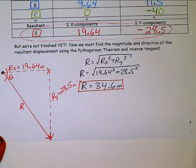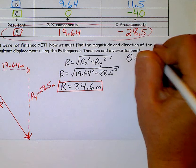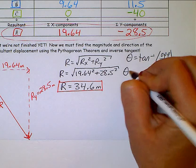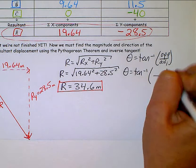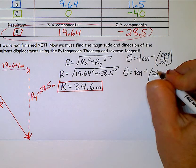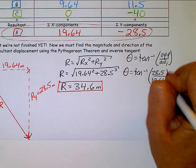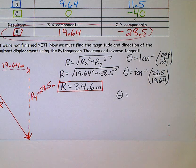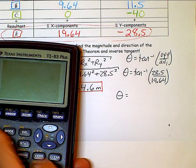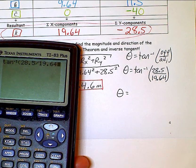I'm using the inverse tangent of opposite over adjacent. So inverse tangent of my opposite of the angle here is this 28.5. My adjacent is the 19.64. Set in my calculator. Inverse tangent of 28.5 divided by 19.64. And I have 55.4.